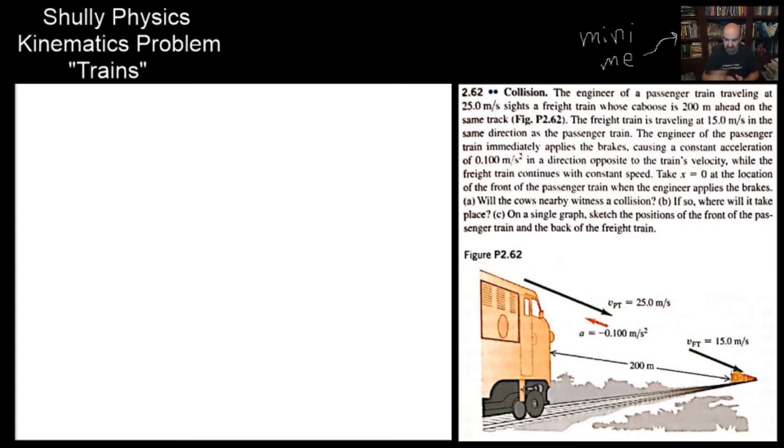So that's the first thing to understand. And if so, where will it take place? So we need to find an x value, a position. With this, we've got two different objects. So we need two different equations of motion. But they have to be related by some of their quantities.